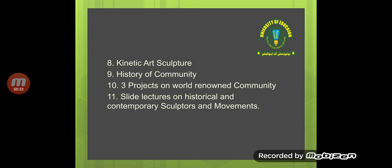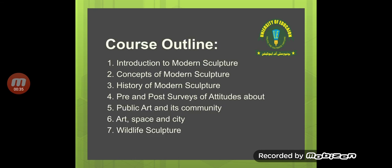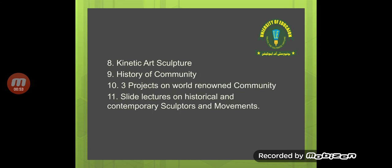Here is your course outline, which you can see on your screen. It includes the introduction to modern sculpture, concepts of modern sculpture, history of modern sculpture, pre and post surveys of attitudes about public art in its community, art space in city, white left sculpture, kinetic art sculpture, history of community, three projects on world-renowned community sites, and lectures on historical and contemporary sculptors and movements.